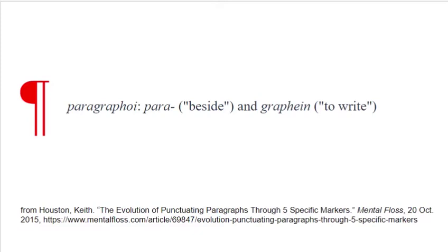Eventually, when the printing press came along, the typesetters — the people setting up the page for printing — would push over the text a little bit to leave a space for other people to come along and add this little paragraph mark in and make it all pretty and red. But eventually they had so many texts that people stopped adding in the little pilcrows, and readers simply got used to seeing the text pushed over — the indenting — and recognizing that that was a paragraph.